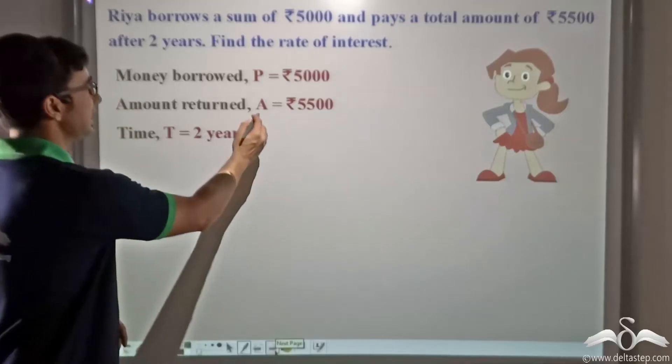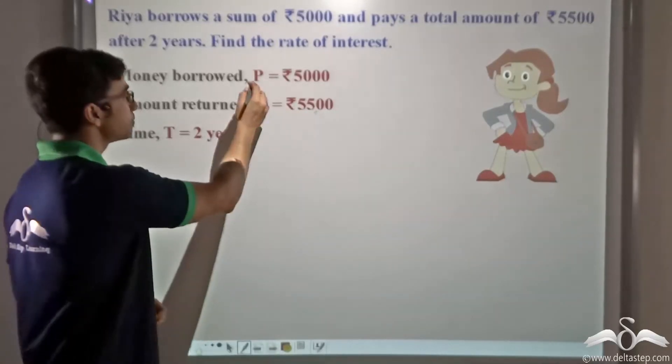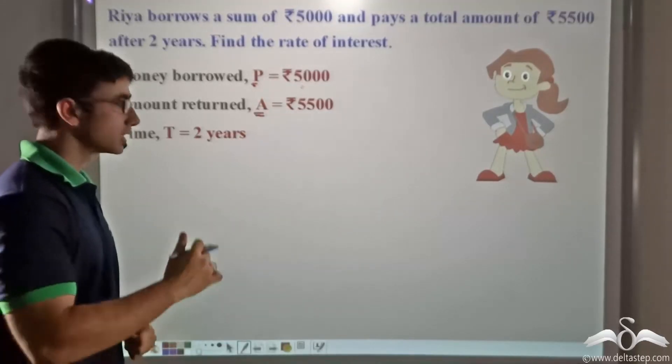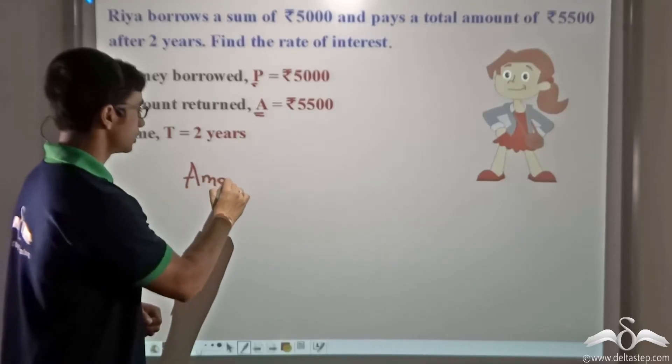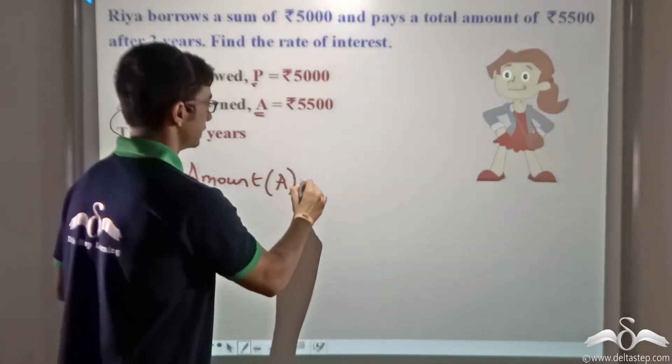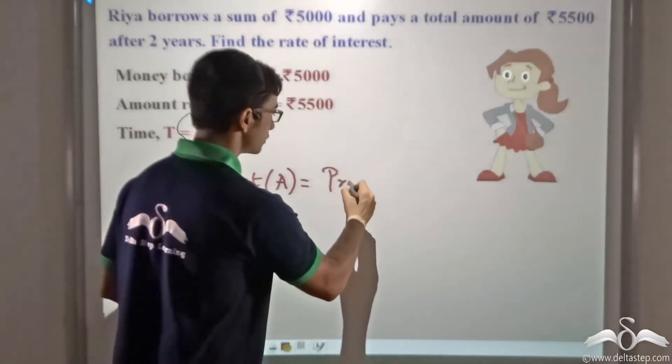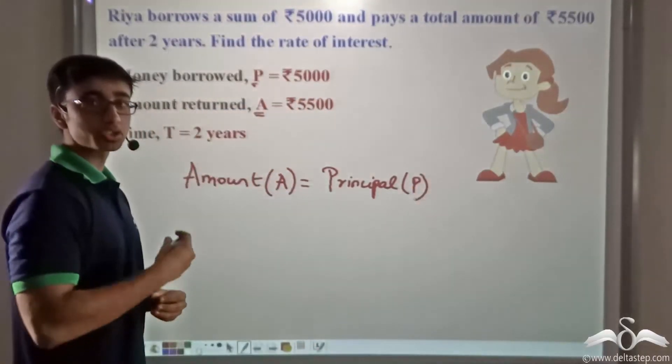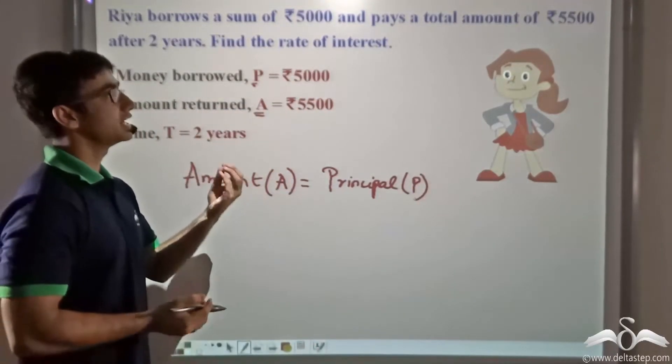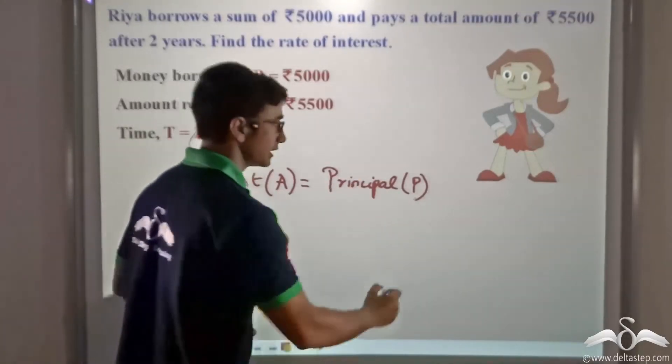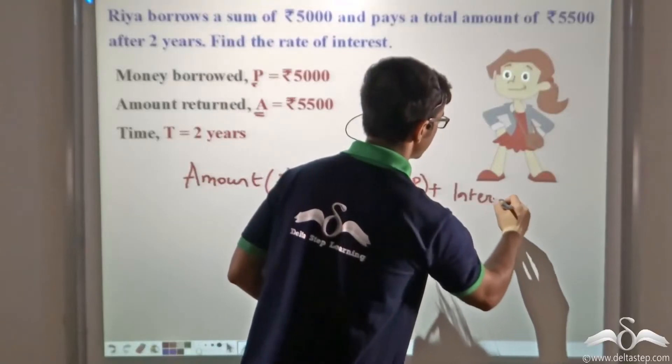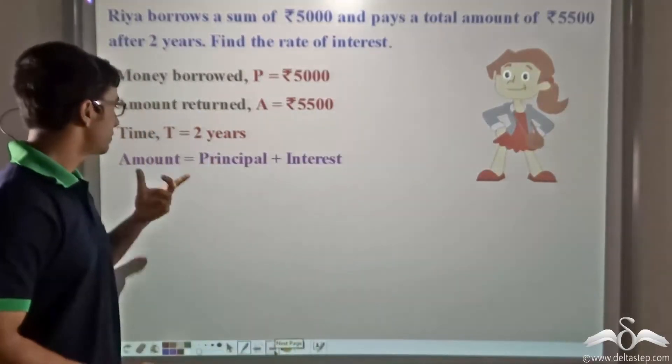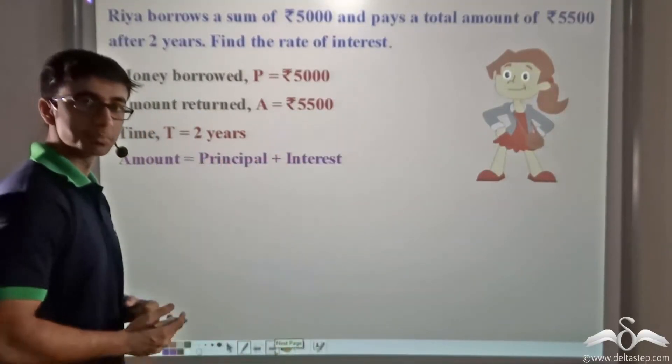So over here we see that A is Rs. 5500 and P is Rs. 5000. Now if you recall our previous discussion, you will remember that amount, that is A, is nothing but the principal, that is P, plus the extra amount of money that needs to be paid in order to be able to borrow this P, and that is the simple interest I. Thus, amount is equal to principal plus the simple interest.